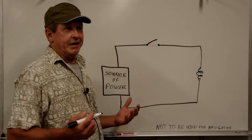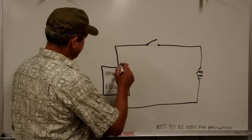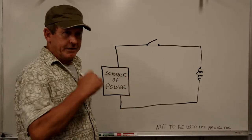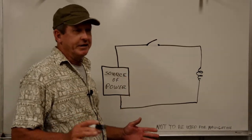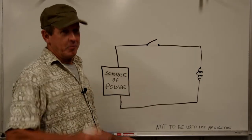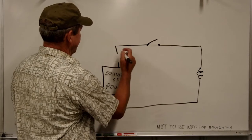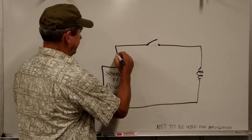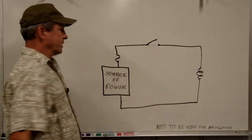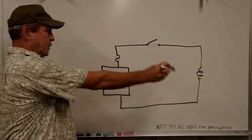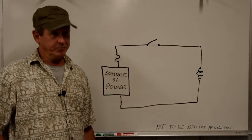Now, electrons can be overachievers and they can get a little carried away sometimes. So I'm going to put a device in here to say that if you guys get too rowdy and start causing trouble, the party's over. Right here I'm going to add a fuse in there so that if our electrons get a little out of control, we can shut them down — the party's over.